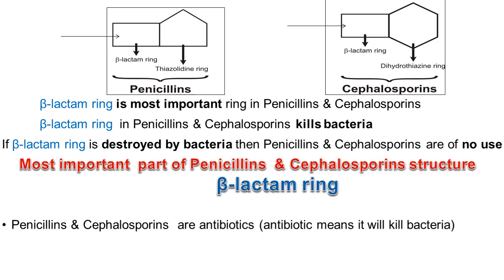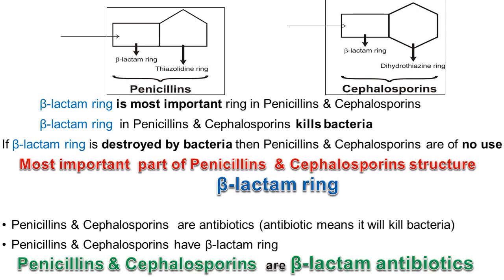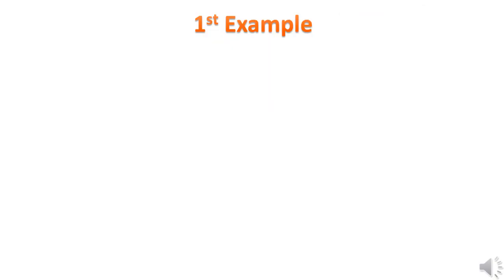Penicillins and cephalosporins are antibiotics — antibiotic means it will kill bacteria. Because penicillins and cephalosporins have the beta-lactam ring, they are called beta-lactam antibiotics. In the examples discussed below, we will take penicillin as an example; cephalosporins will act in the same manner as penicillins.